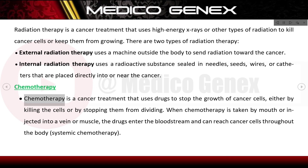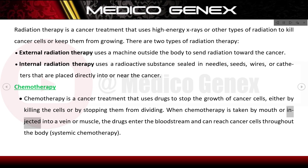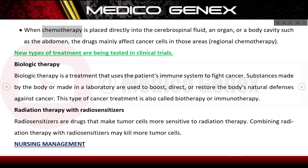Chemotherapy uses drugs to stop the growth of cancer cells, either by killing the cells or by stopping them from dividing. When taken by mouth or injected into a vein or muscle, the drugs enter the bloodstream and can reach cancer cells throughout the body — this is systemic chemotherapy. When chemotherapy is placed directly into the cerebrospinal fluid, an organ, or a body cavity such as the abdomen, the drugs mainly affect cancer cells in those areas — this is regional chemotherapy.